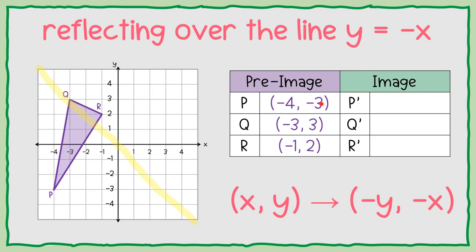So if they switch places, it's going to be negative 3, negative 4. But then I want to change the signs as well. So they are both going to become positive. So that point is going to turn into 3, 4. 3, 4. P prime.